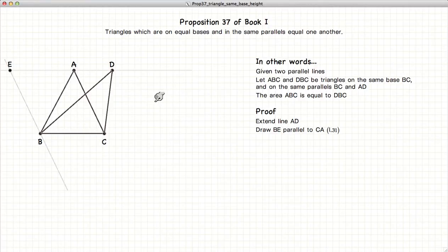And now we are going to draw a line parallel to BD starting at the point C.